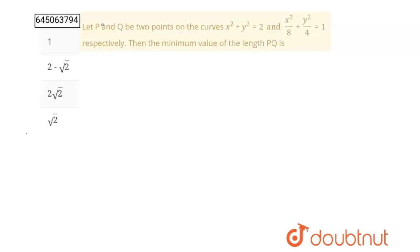Hello students, here question is let P and Q be two points on the curves, this and this respectively. Then the minimum value of length PQ is and these are our four options. We have to say which of the following option is correct.